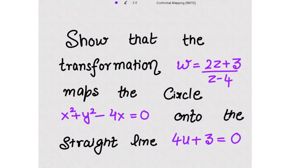We need to show that the transformation w equal to (2z + 3)/(z - 4) maps the circle x² + y² - 4x = 0 onto the straight line 4u + 3 = 0.